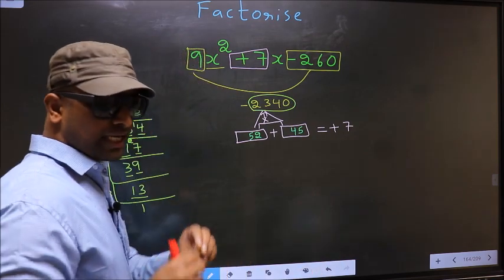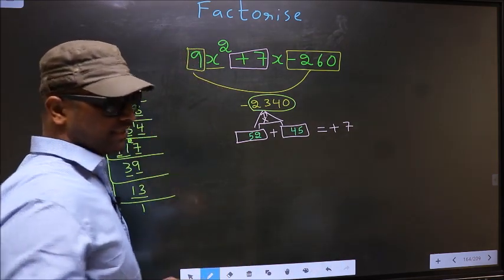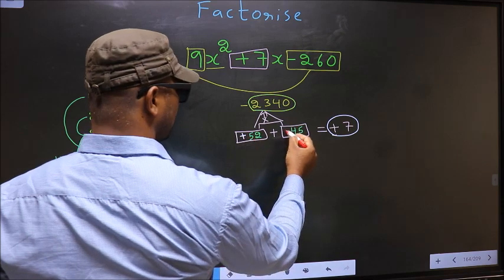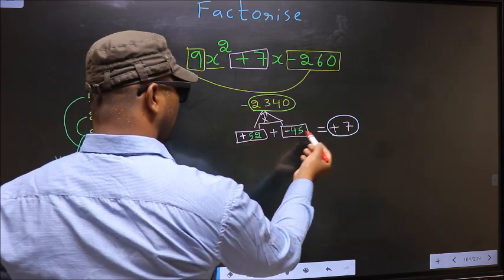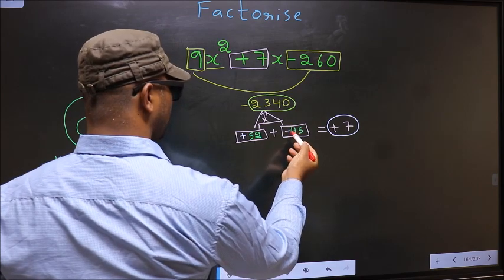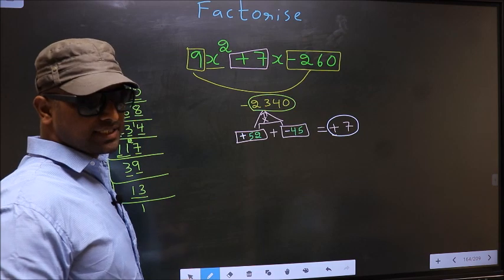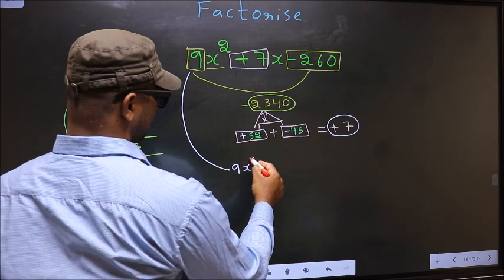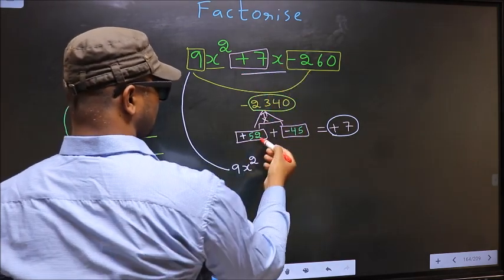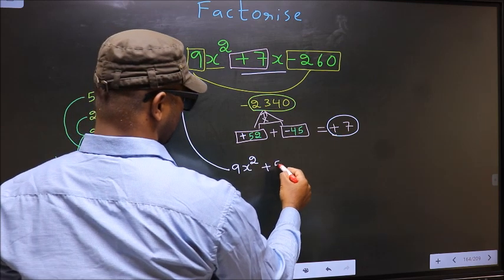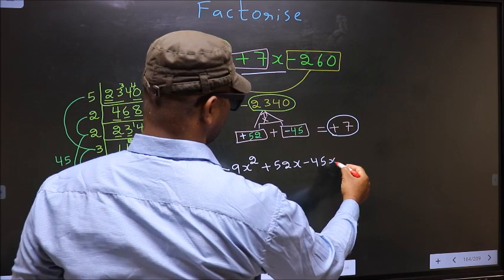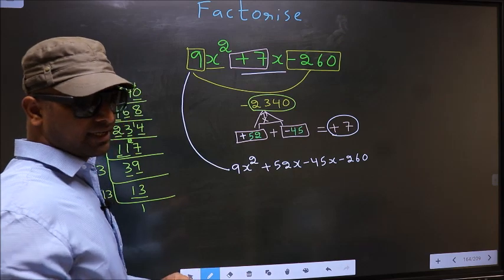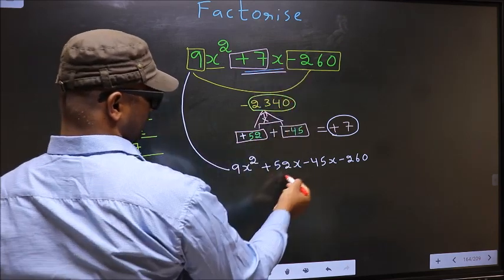Now we should adjust the signs. What I mean is over here we have plus 7. To get plus 7 we should put plus here and minus here. Plus 52 minus 45 is plus 7, plus 52 into minus 45 is minus 2340. So we have adjusted the signs. Now you change this to 9x square. In place of plus 7x, now we should write this plus 52x minus 45x minus 260.